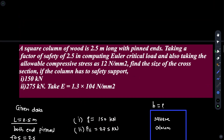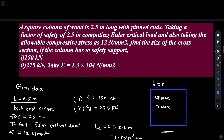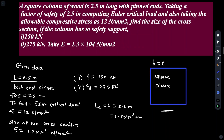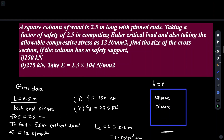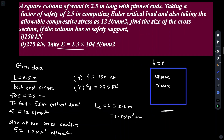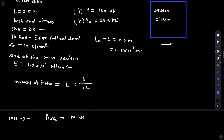The factor of safety is 2.5. We are computing Euler's critical load and taking the allowable compressive stress as σc = 12 N/mm². Find the size of the cross section B if the column has to safely support: safe load case 1 is 150 kN and safe load case 2 is 275 kN. The modulus of elasticity E = 1.3 × 10⁴ N/mm².